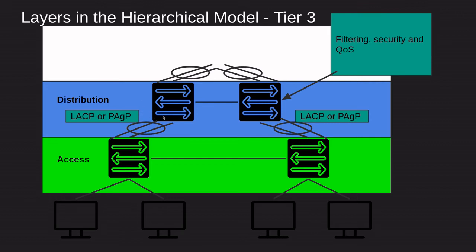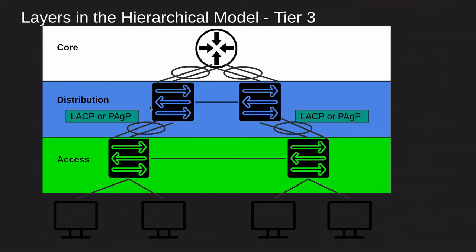You're also going to have some filtering, security, and quality of service happening at the distribution layer. Then we have the core. The core is basically the backbone connectivity and it's the aggregation point for all layers and modules in the Cisco enterprise campus architecture. The core must provide a high level of redundancy and adapt to changes very quickly. At the core, you're going to have PAgP and LACP going from the distribution to the core, and you're also going to see protocols like HSRP, VRRP, and GLBP, which are the first-hop redundancy protocols.